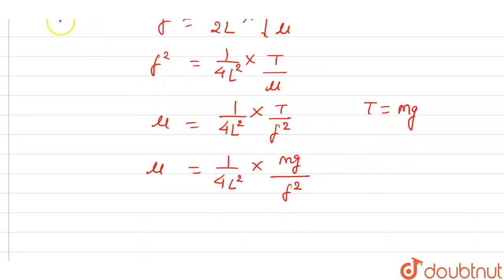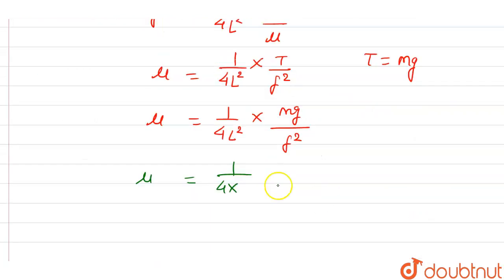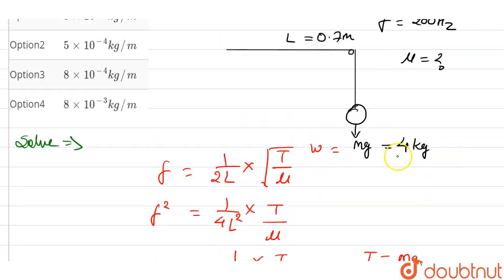So mu is equal to 1 upon 4L square into Mg divided by F square. Now we have to find the value for this question. So mu is equal to 1 upon 4 times 0.7 meter square, which is the length of the wire. This is the mass, which is equal to 4 kg.